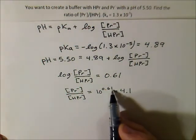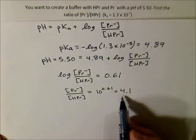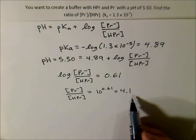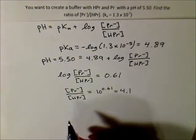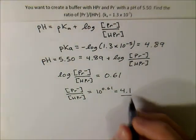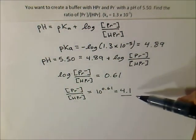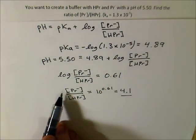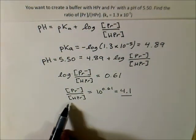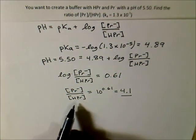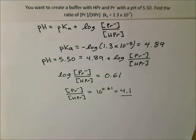So, in this case, two significant figures past the decimal, two total significant figures. And that tells us that our ratio of base to acid to obtain this pH of 5.50 is 4.1. So, we need 4.1 moles of Pr- per one mole of HPr. And that's how you do acid-base buffer solutions.